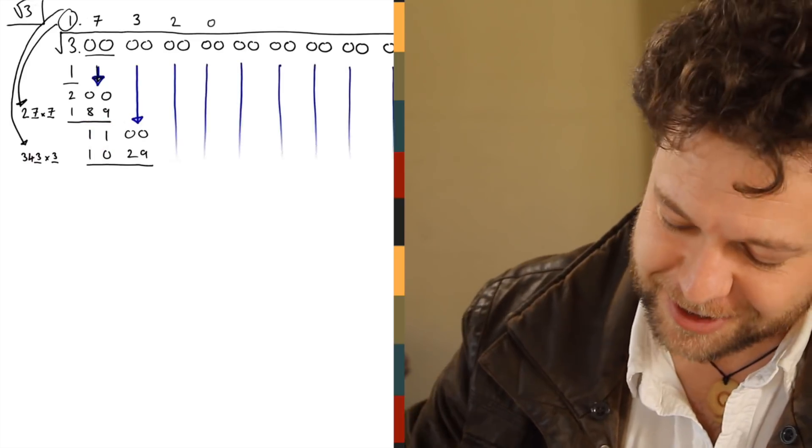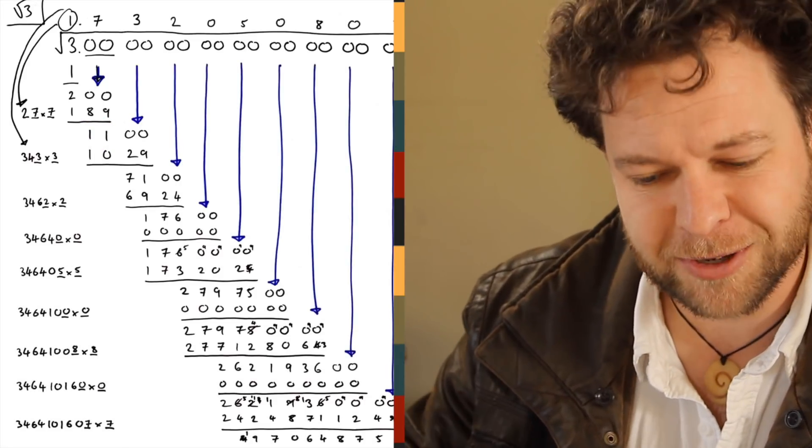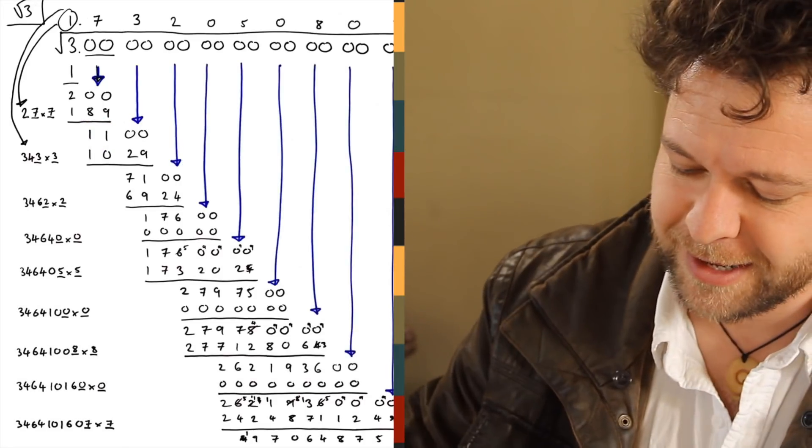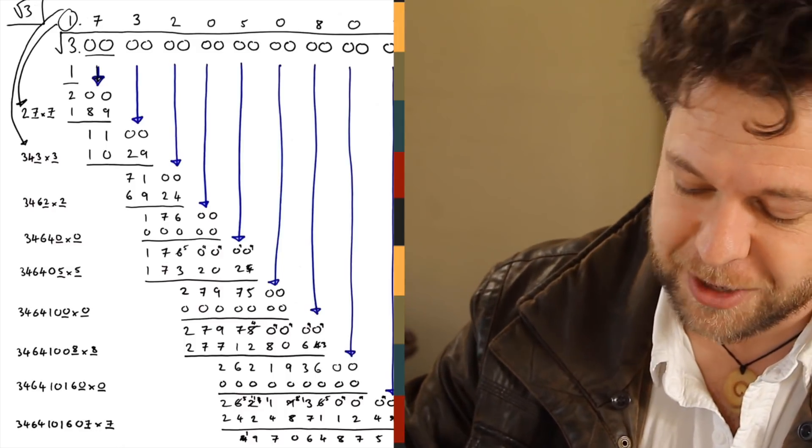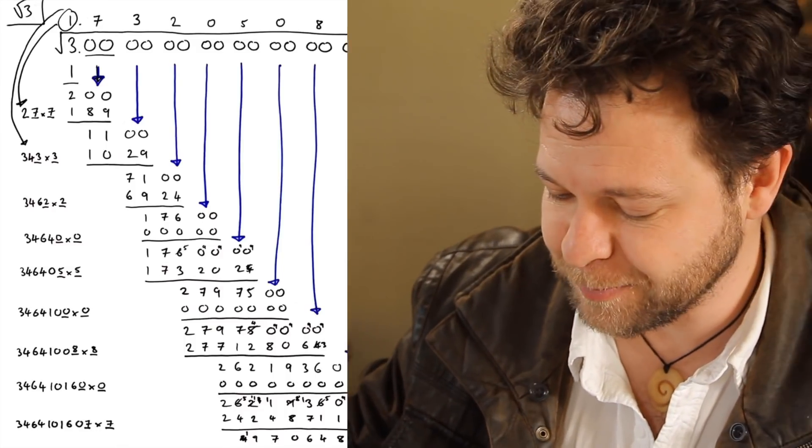So all the time we're bringing down the next two digits, which is a little bit like the long division where they do one digit at a time. Find out the digit that goes in, and you repeat. And you end up homing in on the square root of 3 in this case, after some large calculations.